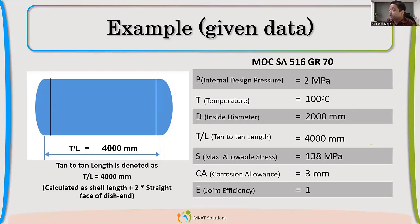So internal design pressure, 2 MPa. Temperature, 100 degrees Celsius. D is the inside diameter and it is 2000 mm.